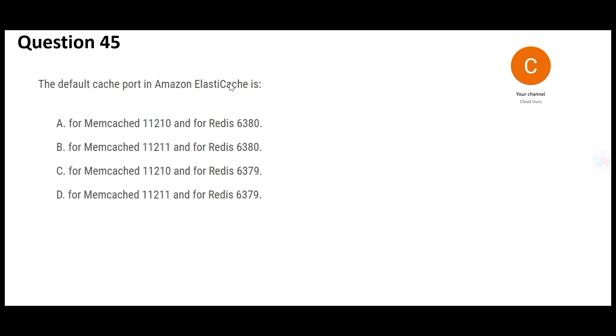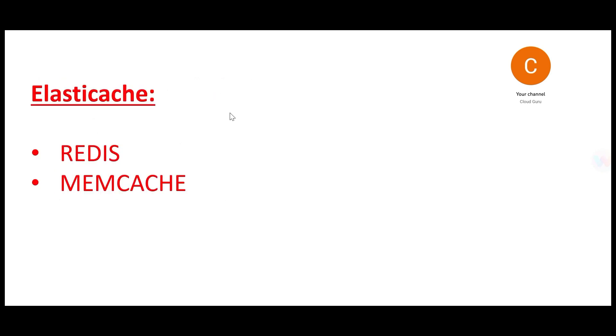Now let's look at the next question, which asks about the default cache port in ElastiCache. ElastiCache is a caching product that has two options: Redis cache or Memcache. Before cloud, Redis and Memcache already existed; in the cloud world they are brought together using the same technology. Suppose you have an EC2 instance with an application like a website hosted on it.